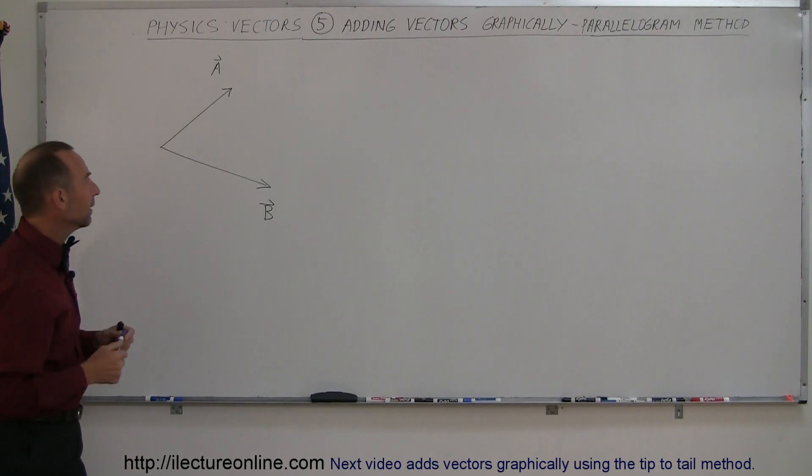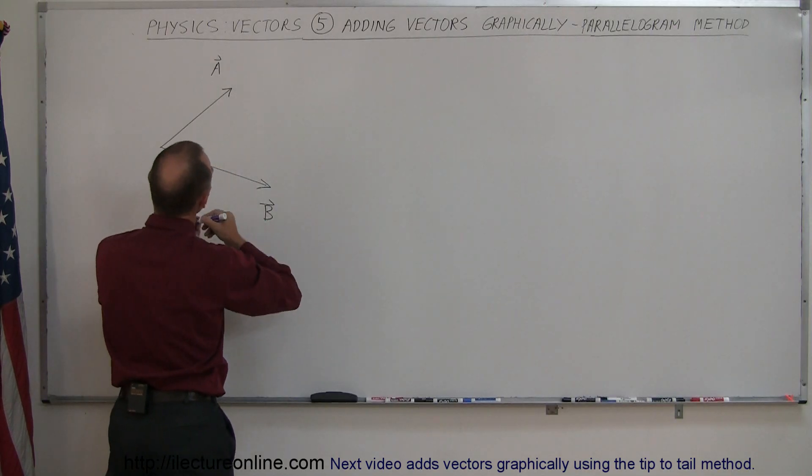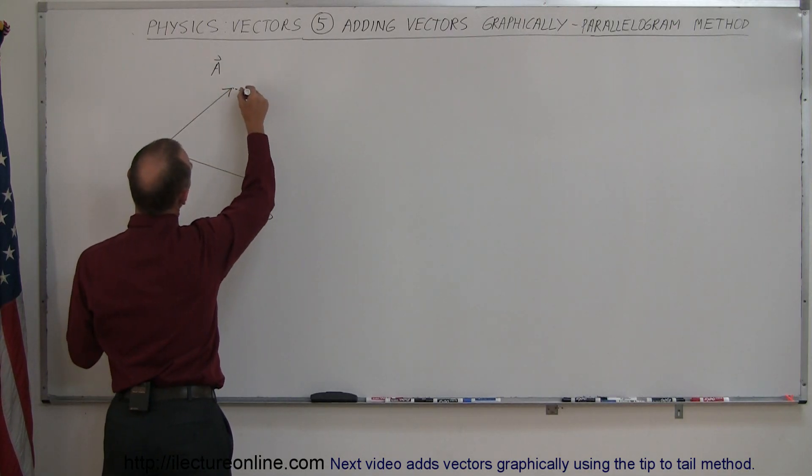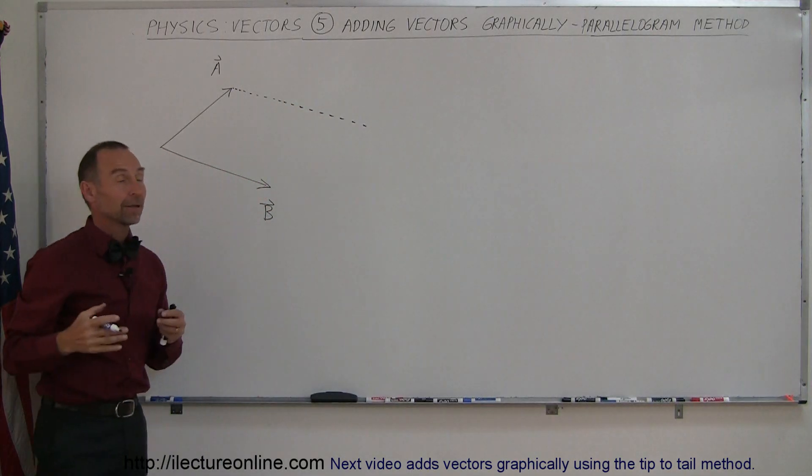Then what you're going to do is take a pen, go to the tip of one of the vectors and draw a line parallel to the other vector. So since this vector B is in this direction, you're going to draw a line like so, parallel and hence the name parallelogram method.